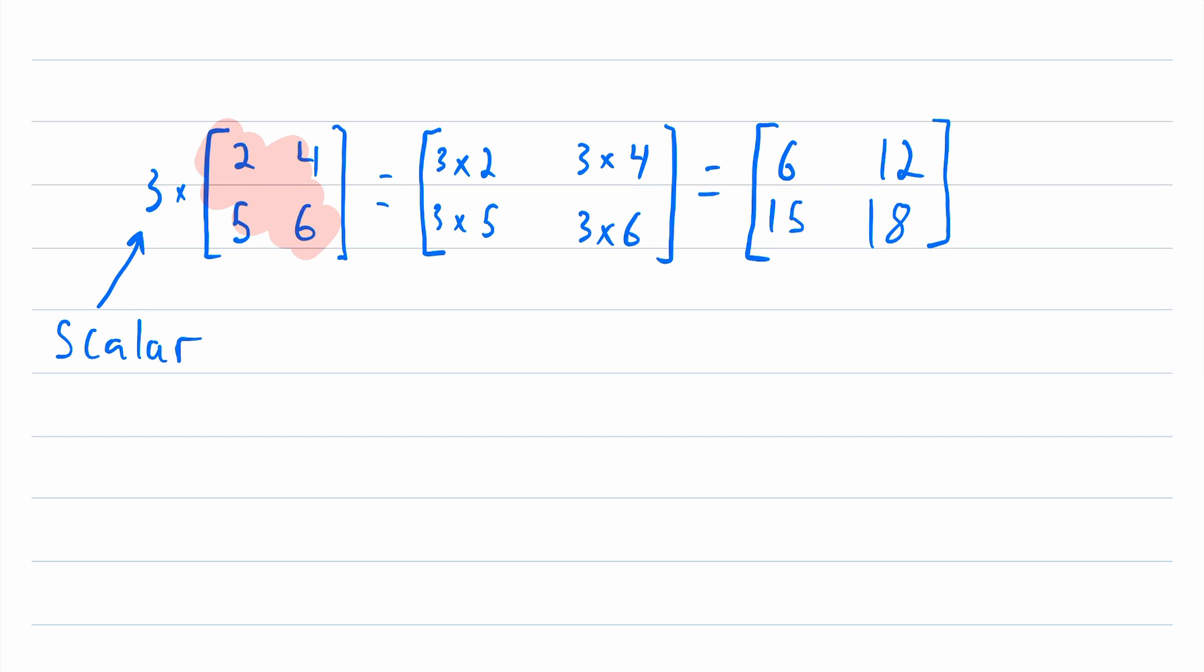So when we multiply a matrix by a real number, that is called scalar multiplication. And to carry out this operation, all we have to do is multiply each entry of the matrix by the scalar. I think it's pretty intuitive.